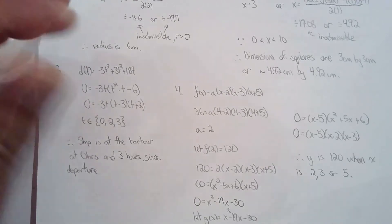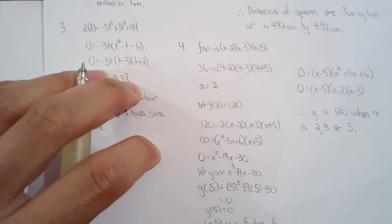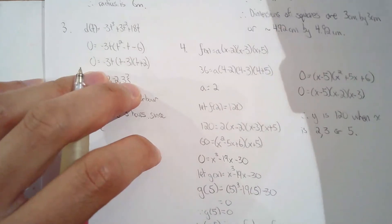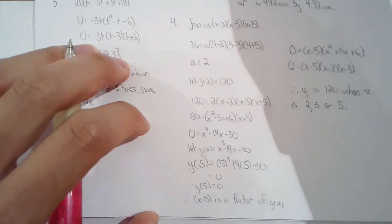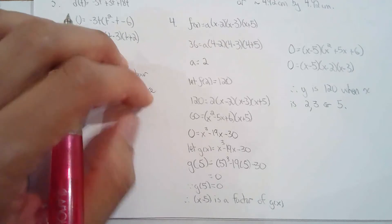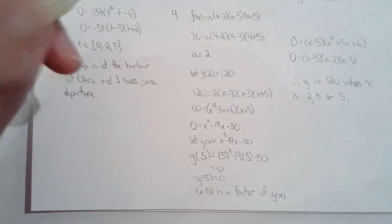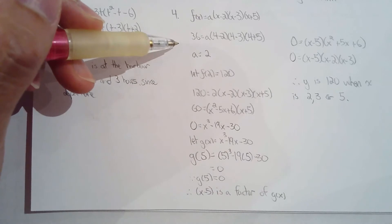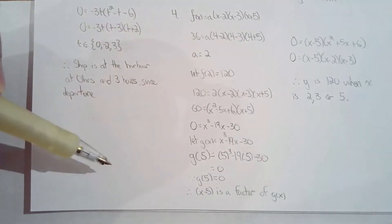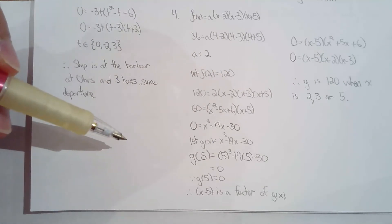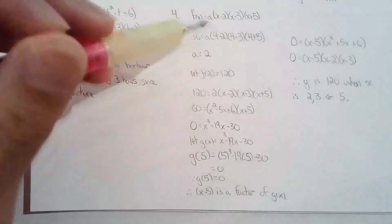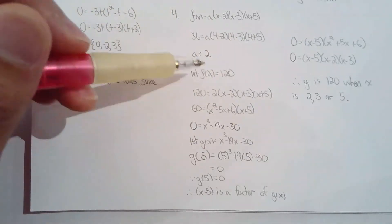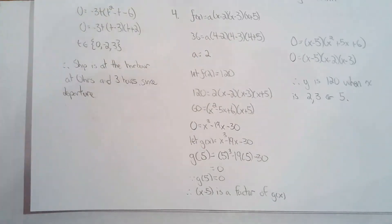Question 4, debatable as whether this is a word problem. They gave me the zeros. They gave me a point. So basically, you have to find the equation for that specific polynomial function, and then solve for X given Y is 120. So really not much to say here. This one is debatable as to whether this is a word problem.